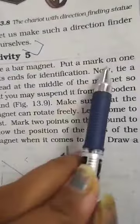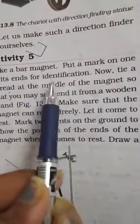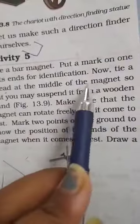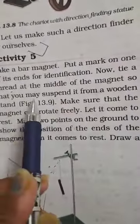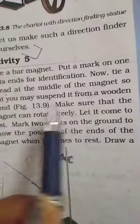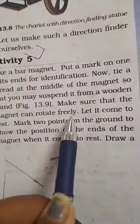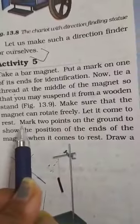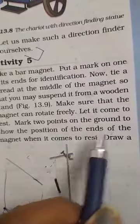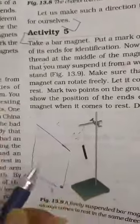Take a bar magnet, put a mark on its one end for identification. Now tie a thread at the middle of the magnet so that you may suspend it from a wooden stand. Make sure that the magnet can rotate freely. Let it come to rest. Mark two points on the ground to show the position of the ends of the magnet when it comes to rest.